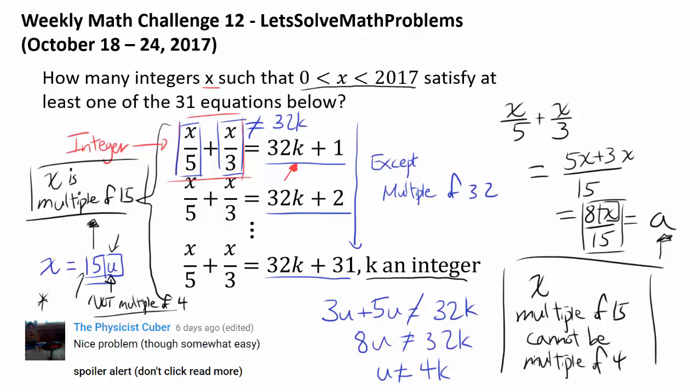So x is a multiple of 15 that's not a multiple of 4, and we wish to find how many such x exist between 0 and 2017.